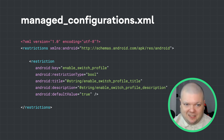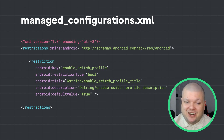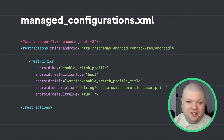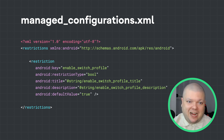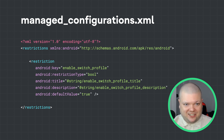The file has a single top-level element and a single child-level element for every configuration option you'd like to create for your app. The key attribute is your reference for that configuration and is what you use to access the value later on. The title and description text communicate to IT admins what the configuration option is used for. The data type defines the type of that configuration, and the default value is what is applied by default.